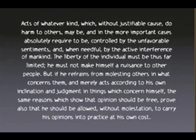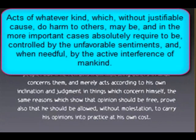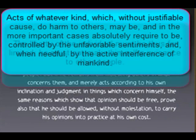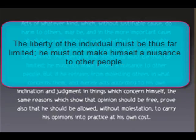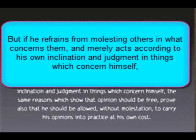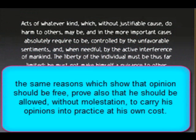In Mill's famous treatise on liberty, he says the following: 'Acts of whatever kind which, without justifiable cause, do harm to others, may be, and in the more important cases, absolutely required to be controlled by the unfavorable sentiments, and, when needful, by the active interference of mankind. The liberty of the individual must be thus far limited. He must not make himself a nuisance to other people. But if he refrains from molesting others in what concerns them, and merely acts according to his own inclination and judgment in things which concern himself, the same reasons which show that opinion should be free prove also that he should be allowed, without molestation, to carry his opinions into practice, at his own cost.'